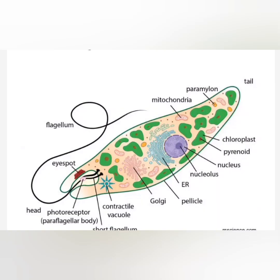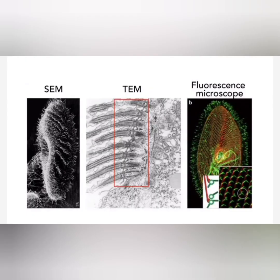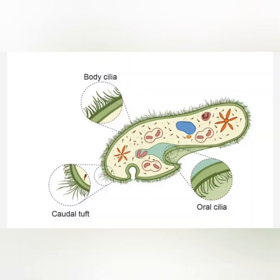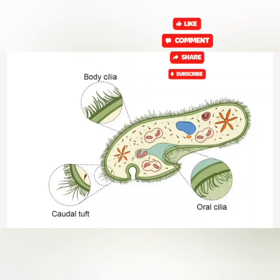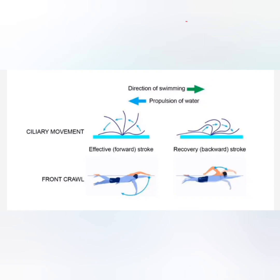Flagella are of three types: bacterial flagella, archaeal flagella, and eukaryotic flagella. Bacterial flagella are present in Salmonella typhi and E. coli. Typhoid is caused by Salmonella typhi.